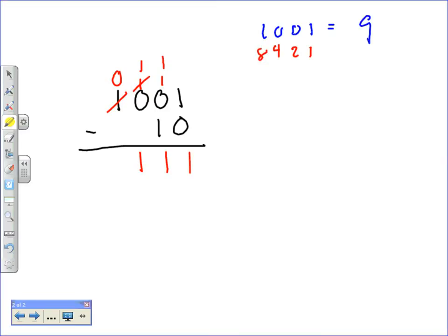And we can also check that 1, 0 would be 2. So 9 minus 2 gives us 7. So let's just double check to make sure our answer that we found before was 7.